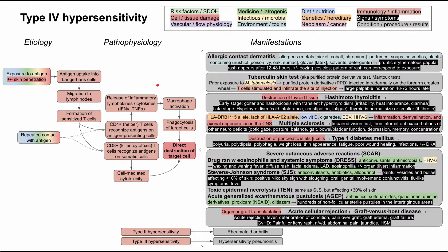This is a mechanism of disease map for type 4 hypersensitivity reactions. I'll be talking about the etiologies, the pathophysiology, and the manifestations of type 4 hypersensitivity reactions. This includes a number of conditions and diseases, as well as a tuberculosis test that all use the type 4 hypersensitivity pathophysiology.